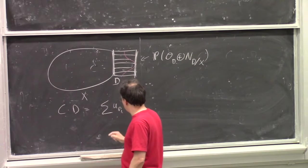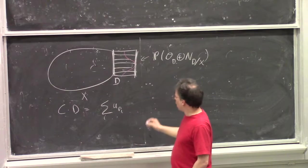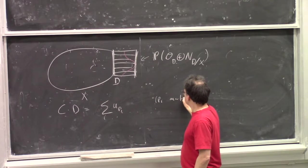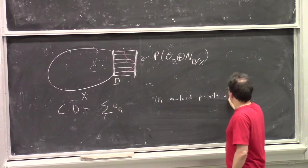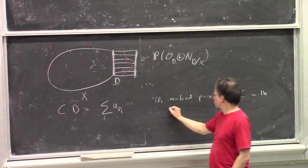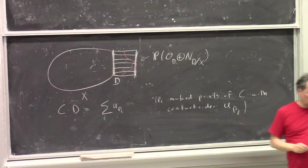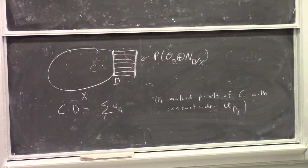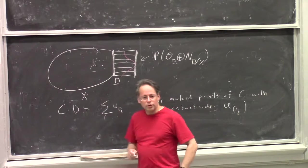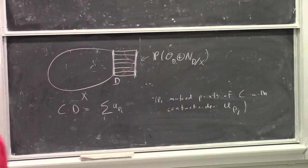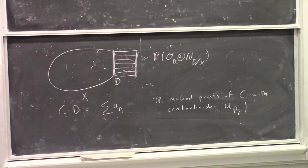C dot D should be equal to the sum of the contact orders nu(P_i), where P_i are marked points of C with the contact order nu(P_i). But you should have C dot D as the sum. Now, if we have just one marked point and now we ask, what about allowing a negative order of tangency? Well, that would mean C dot D is negative. And the only way that can happen is if C is contained in D.